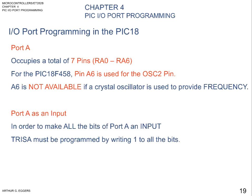Both of those diagrams give you some idea schematically of what's going on when you are making a port an input or an output. Port A occupies a total of 7 pins, RA0 to RA6. But for the PIC-18F458, pin A6 is used for the oscillator 2 pin and is not available if we use a crystal oscillator, which we will learn later in Chapter 8. The following code will continuously send out to port A alternating values of 55H and AAH.